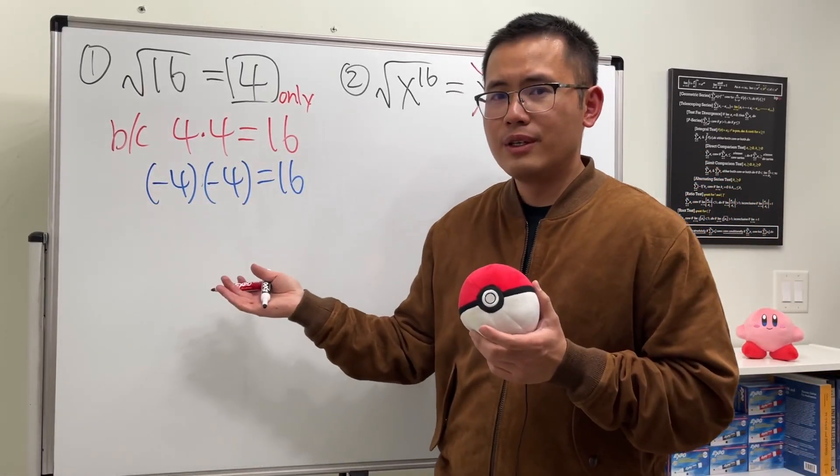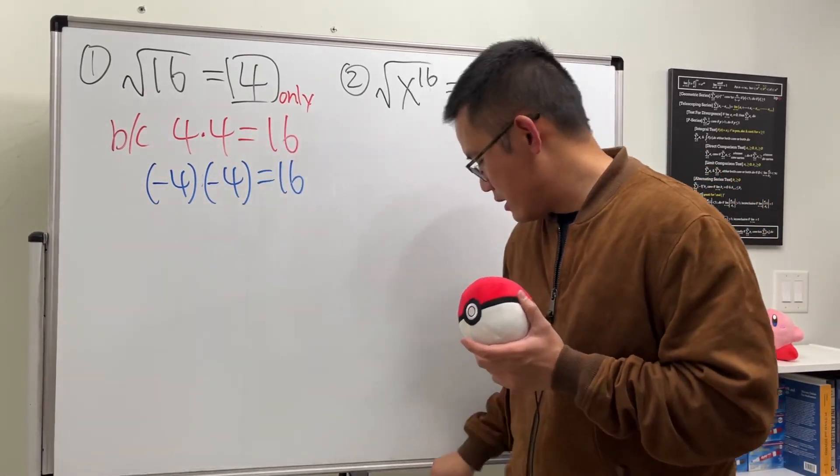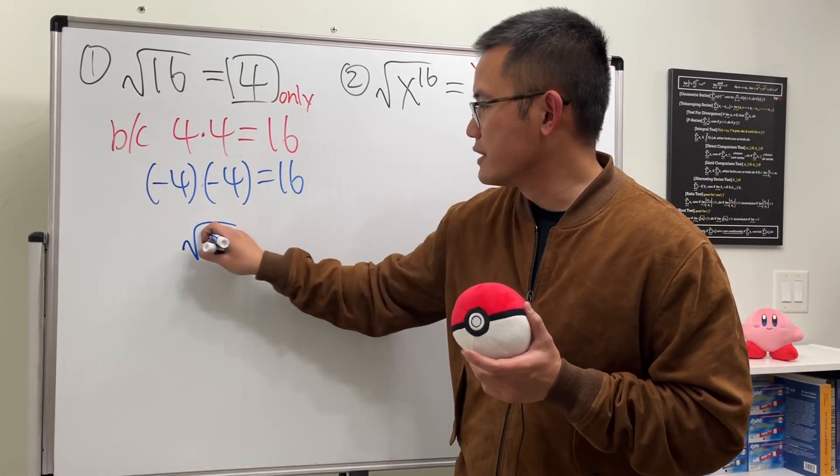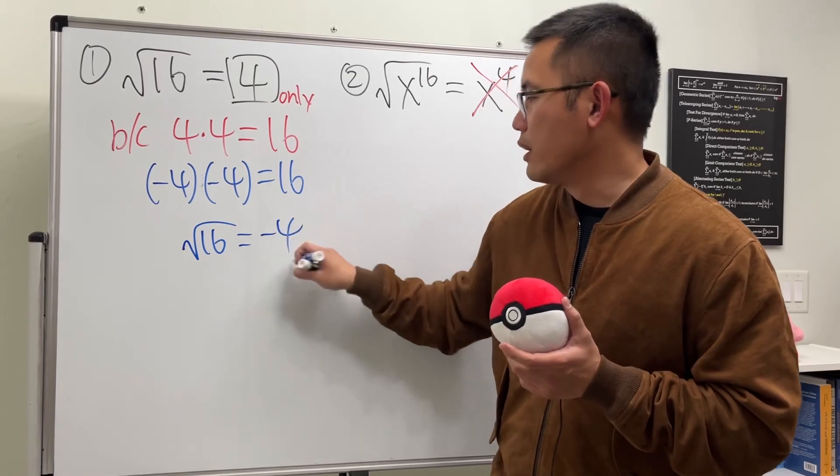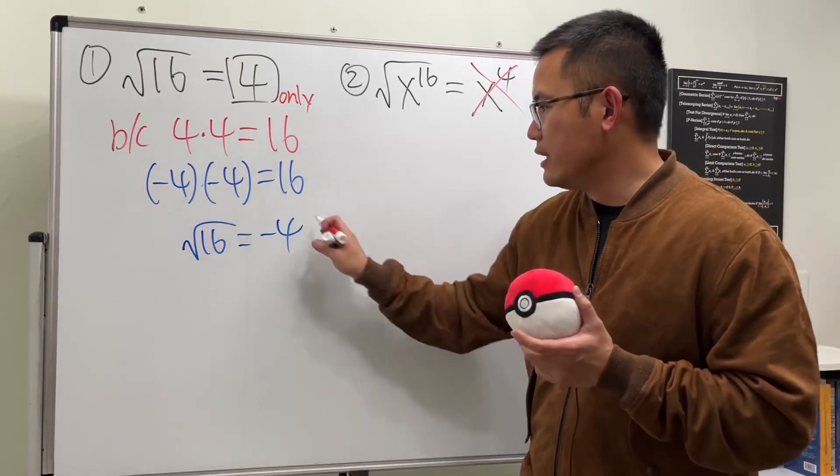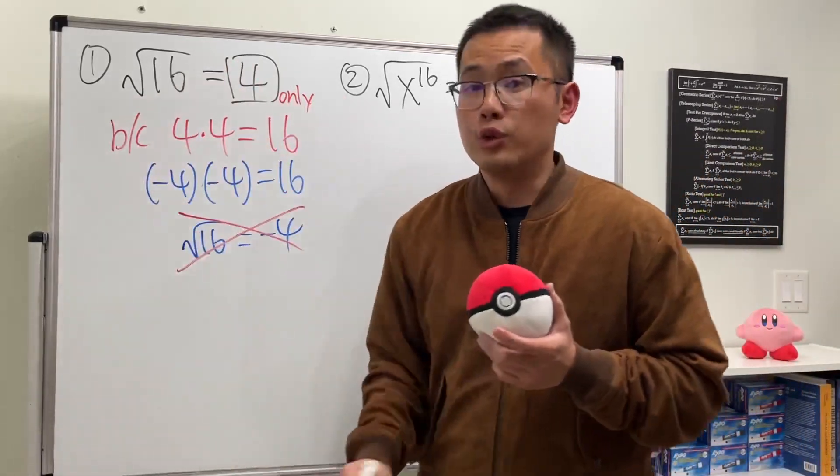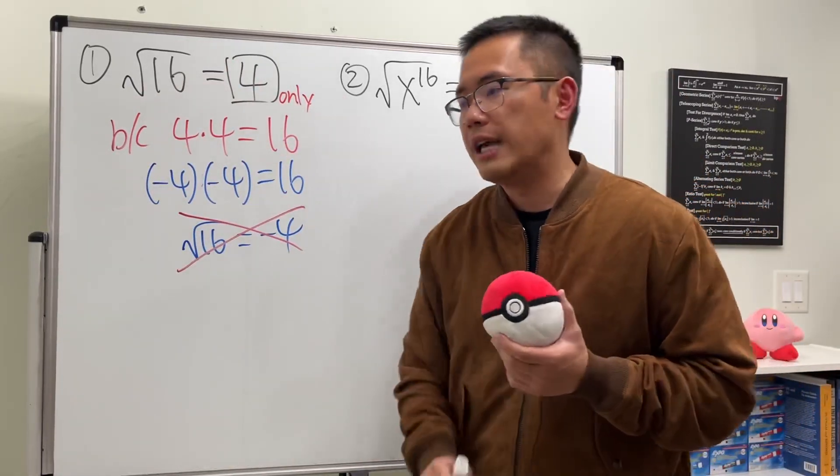This is okay, but do not say square root of 16 is equal to negative 4. Don't do that. This right here is not correct, alright? Because when we're just doing computation, we just want to have one output for the answer.